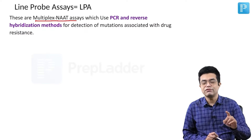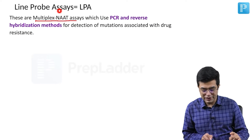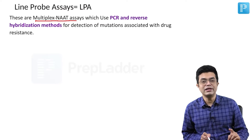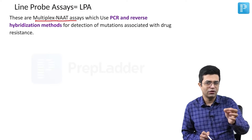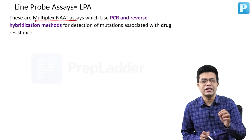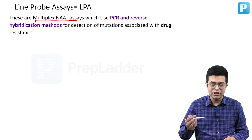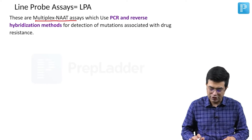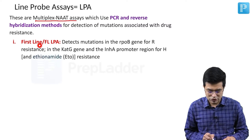Whenever you have to check for drug-resistant tuberculosis, you will be employing line probe assay. In one line, the use of LPA is to detect anti-tubercular drug resistance. There are two generations or two types of LPA which are used. The first is first-line LPA, also written as FL-LPA.